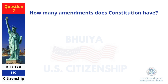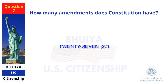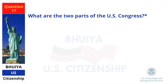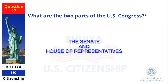How many amendments does the Constitution have? Twenty-seven. What are the two parts of the US Congress? The Senate and House of Representatives.